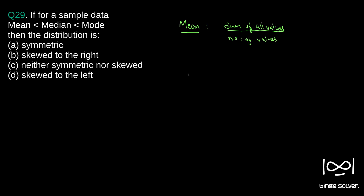Median applies to an ordered list of values. If we have a set of values, we first order them in increasing order — say s1, s2, s3, ... sN — and the middle value, s(N/2), when arranged from smallest to largest, is called the median.